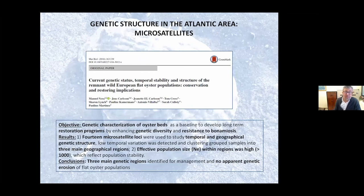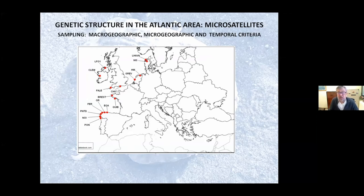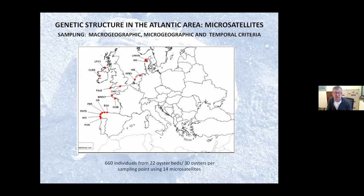The objective of this work was to analyze the genetic structure of oyster beds in the Atlantic area, thinking on a baseline for sustainable management of these populations. We selected samples trying to address three main layers of genetic diversity structuring. We took samples from all the Atlantic area, from different countries involved in the Oyster Recovery Project, but also tried to focus on a small area to look at the micro-geographic level for significant genetic structuring, and also applied a temporal criteria, analyzing consecutive cohorts of different years in flat oyster.